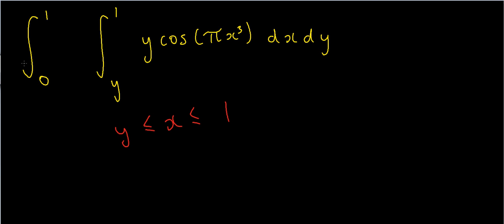What about y? Well if I look at the outermost integral, y has got to vary from y equals 0 — that's the lower limit — and it's got to go all the way up to y equals 1. So that's what the integral is trying to tell us.